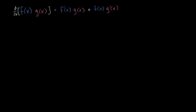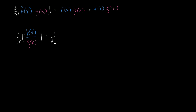So let's see what we're talking about. Let's imagine we had an expression that could be written as f of x divided by g of x, and we want to take the derivative of f of x over g of x. The key realization is to recognize that this is the same thing as the derivative of f of x times g of x to the negative 1 power. And now we can use the product rule with a little bit of the chain rule.